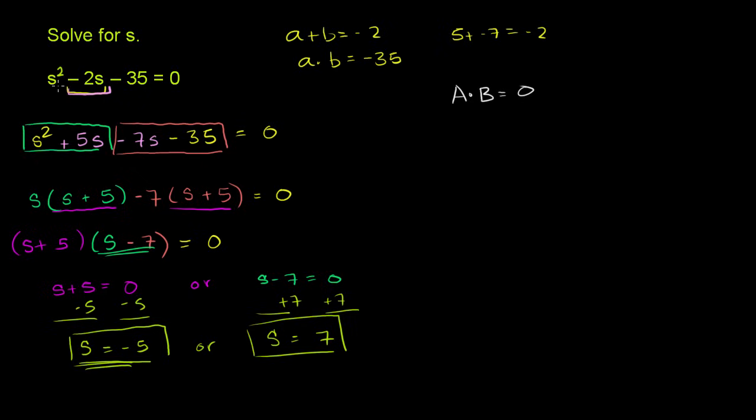We can even verify it. If you make s equal to negative 5, you have positive 25 plus 10, which is 35, minus 35. That does equal 0. If you have 7, 49 minus 14 minus 35 does equal 0. So we've solved for s.